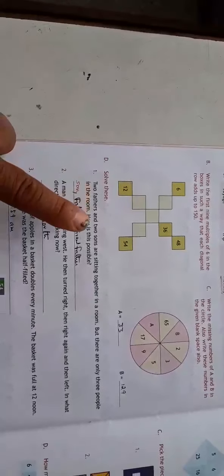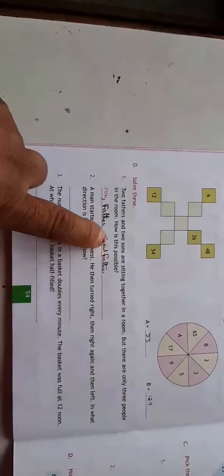Then solve these, two fathers, two sons sitting together. So how many people are sitting? Father and grandfather both are fathers. If we talk about son and father, they are sons. So two sons, two fathers.